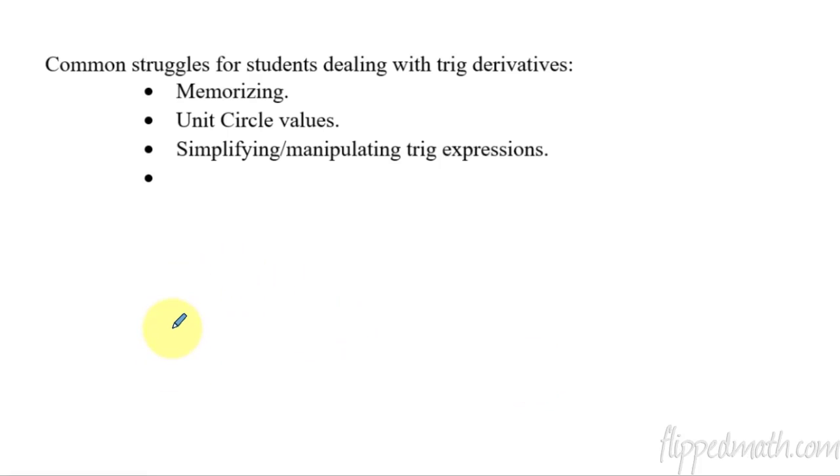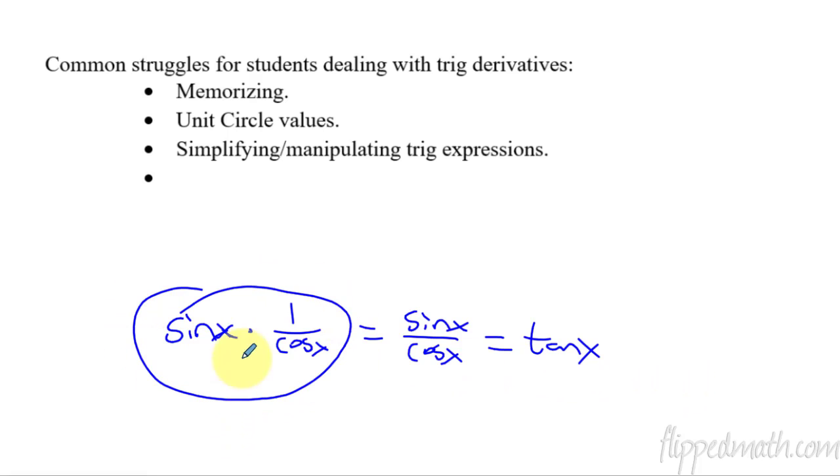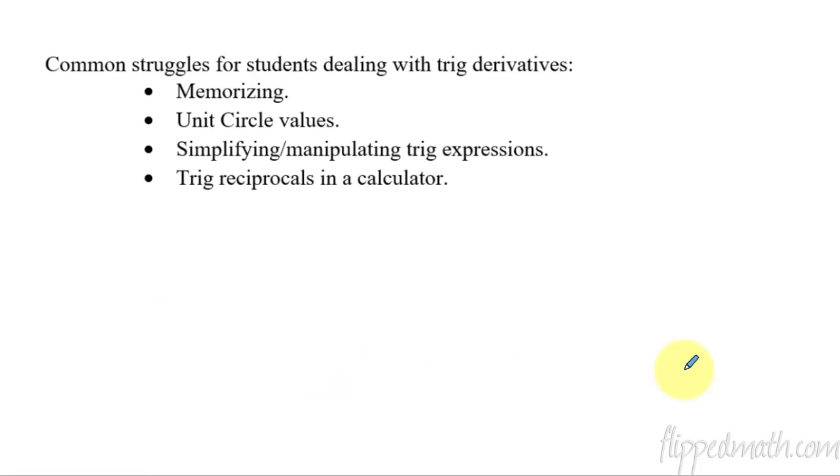Next thing is simplifying, manipulating trig functions. So a quick example would be if I had sine x times, for your answer, 1 over cosine x, can you see and verify that that just is the same thing as sine x over cosine x, which then equals tangent? Can you simplify trig expressions? Okay, the reason you'd have to be able to do that is because if it's a multiple choice problem, they would not leave the answer looking like that. They would simplify it, and so you'd have to be able to know how to manipulate these trig expressions until you get to the final answer of a multiple choice possibility.